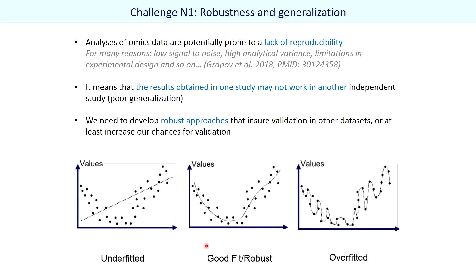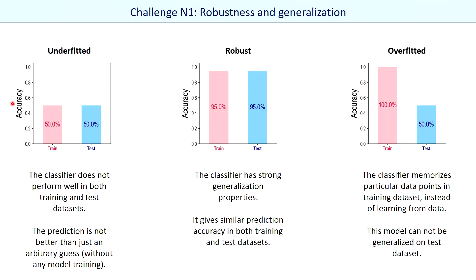The model has good generalization properties because it provides good results in both training and test datasets. The question is: how can we know if our model is underfitted, overfitted, or just fine? We can compare the accuracy obtained in training and test datasets. If the model is underfitted it has poor accuracy in both datasets. When it is overfitted the training accuracy will be very high but test accuracy will be low. If the model is robust and has good generalization properties it works well on both datasets — not necessarily perfect, but accuracy is stable. This is the best expected model for us.